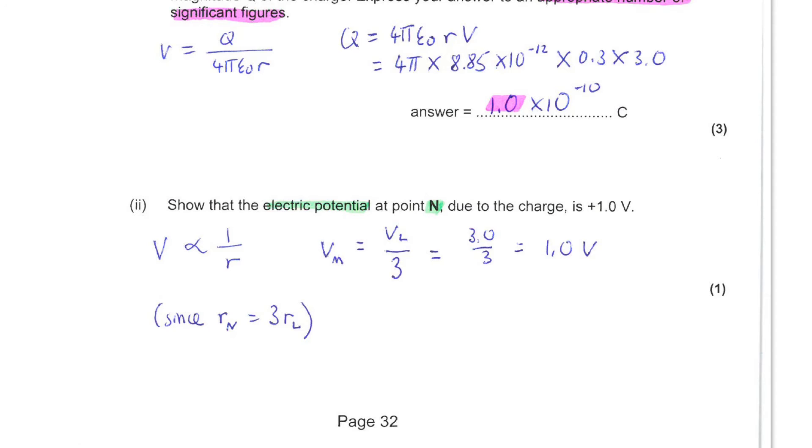So that means since the distance from the charge to N is 3 times the previous distance, then the potential will be 3 times smaller, leading us to our answer of 1 volt.